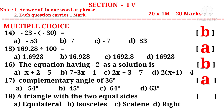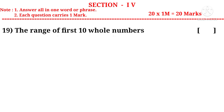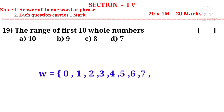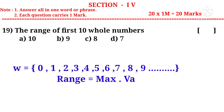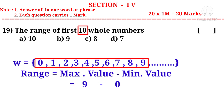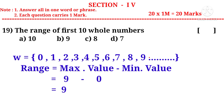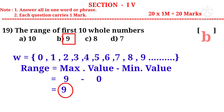Question 18: A triangle with two equal sides — equal indicates ISO, so it is an isosceles triangle. Correct choice is B. Question 19: The range of the first 10 whole numbers — whole numbers start from 0 to 9. Range equals maximum minus minimum, which is 9 minus 0 equals 9. Correct choice is B.